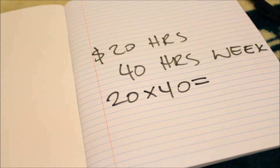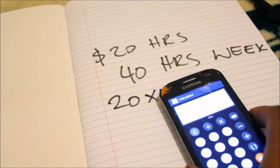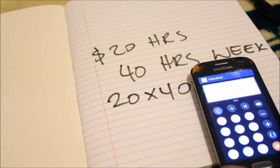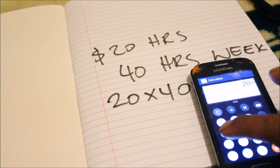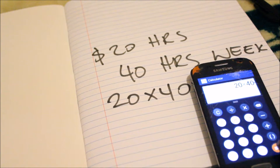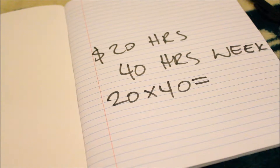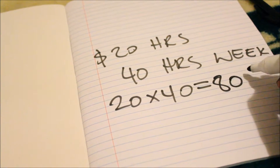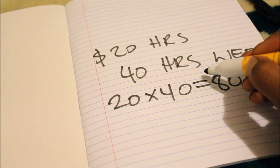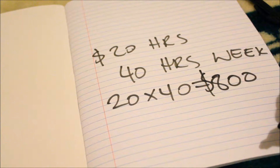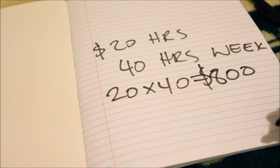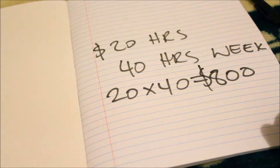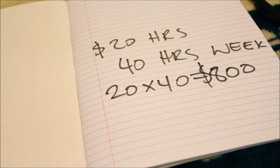So it will be 20 times 40. Let's get the calculator: 20 times 40 equals 800. That's $800 — and that's excluding tax right now.